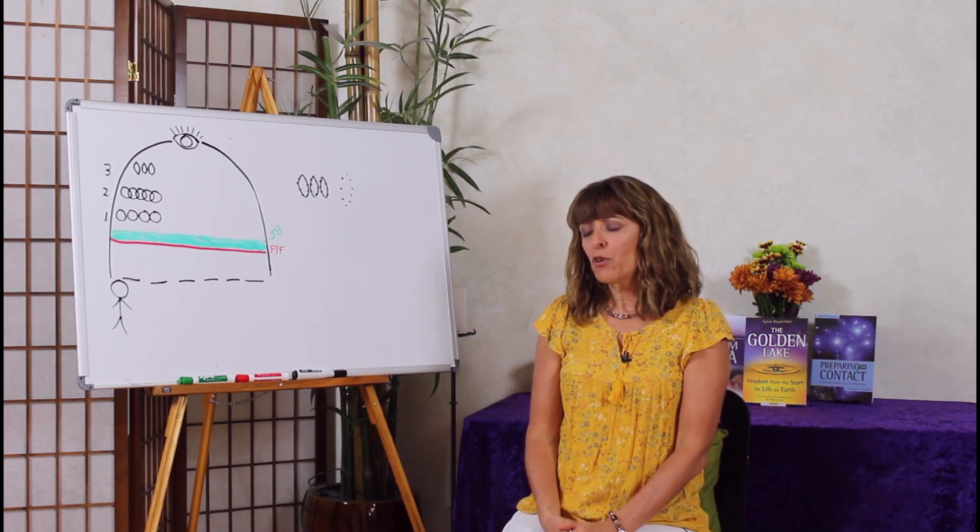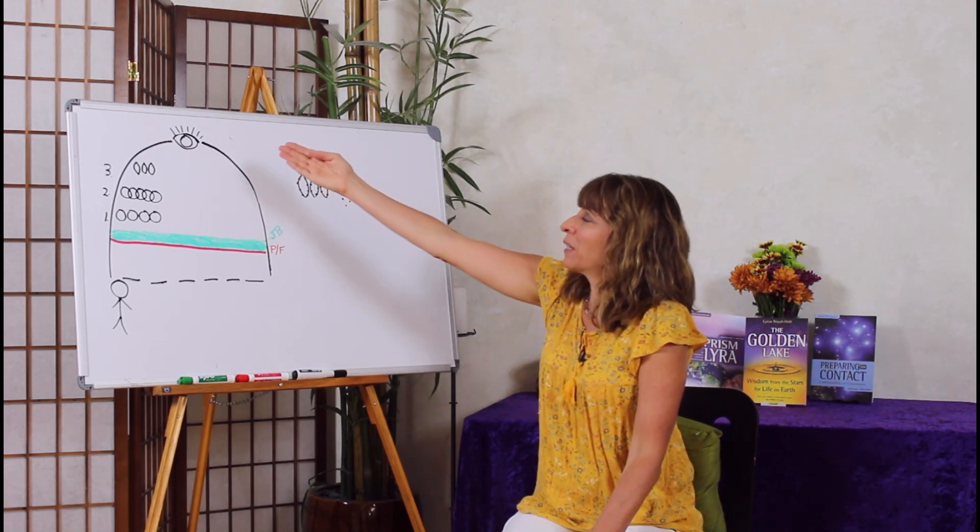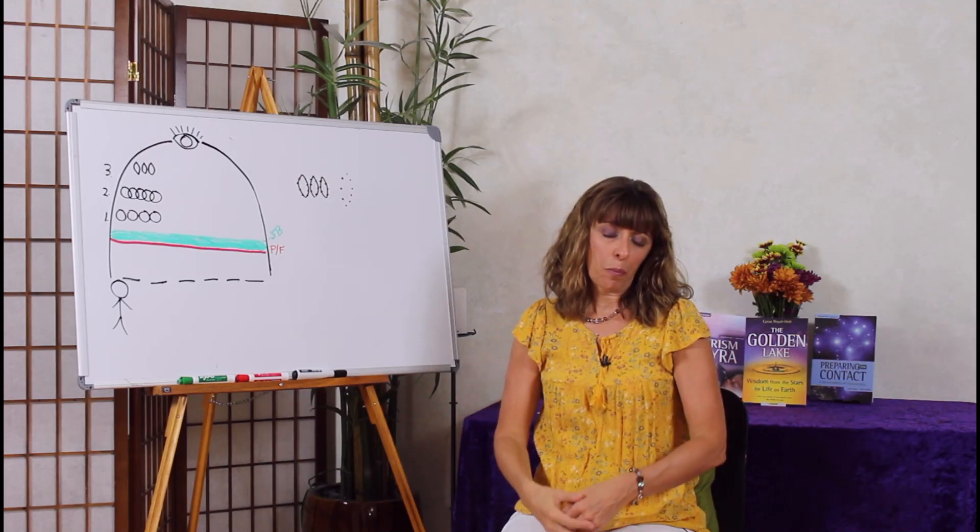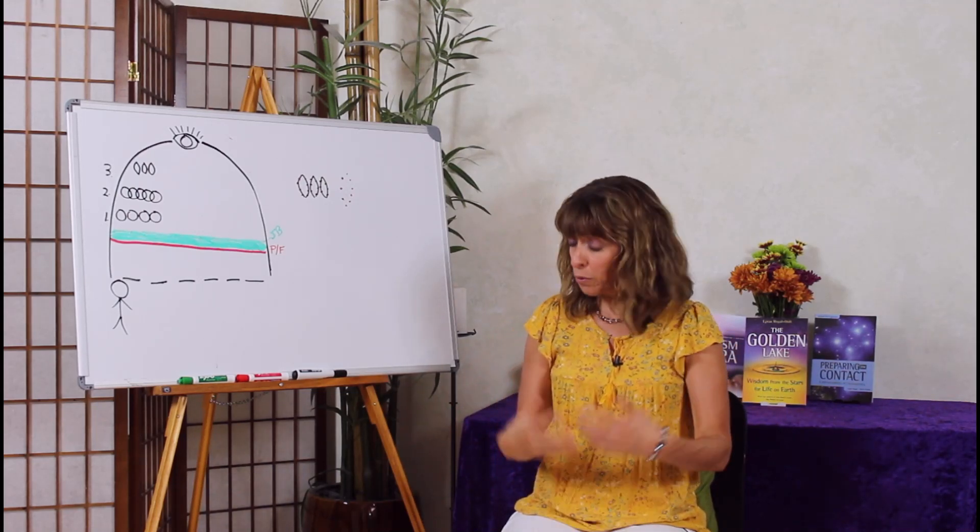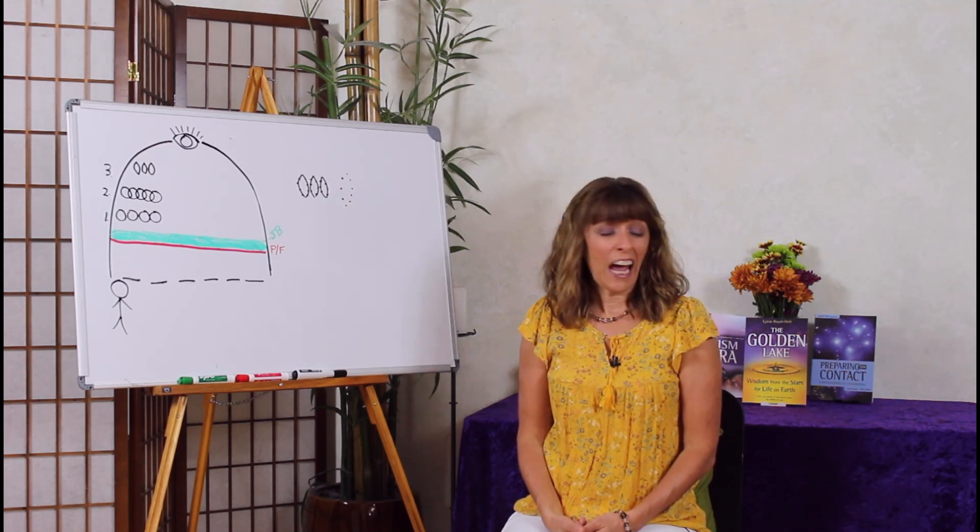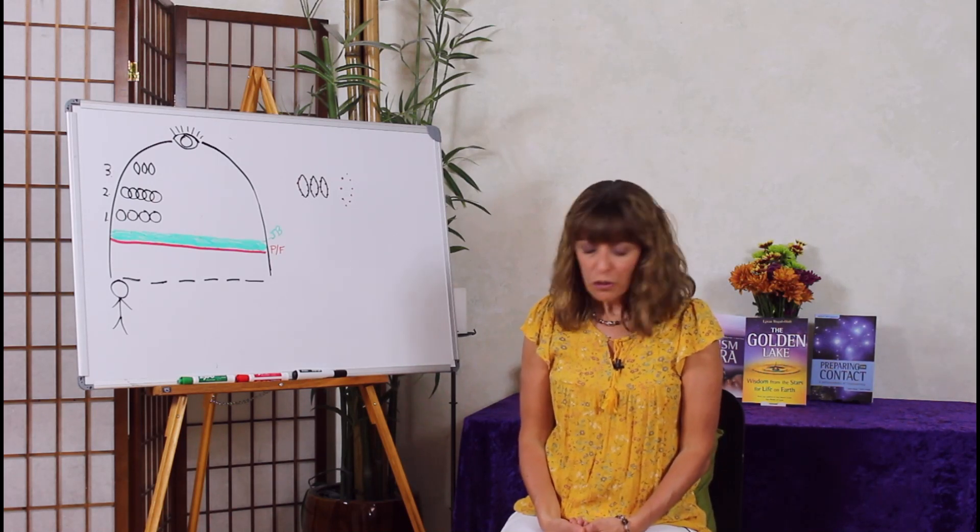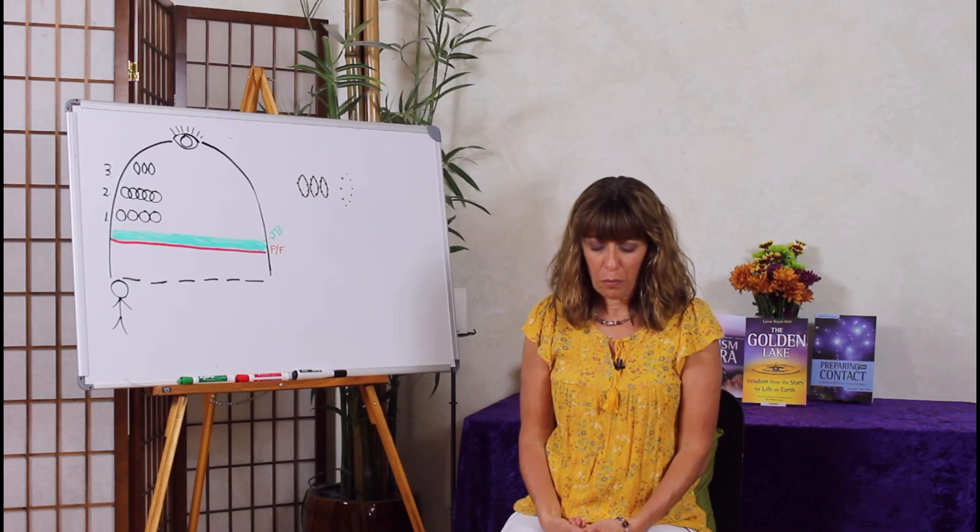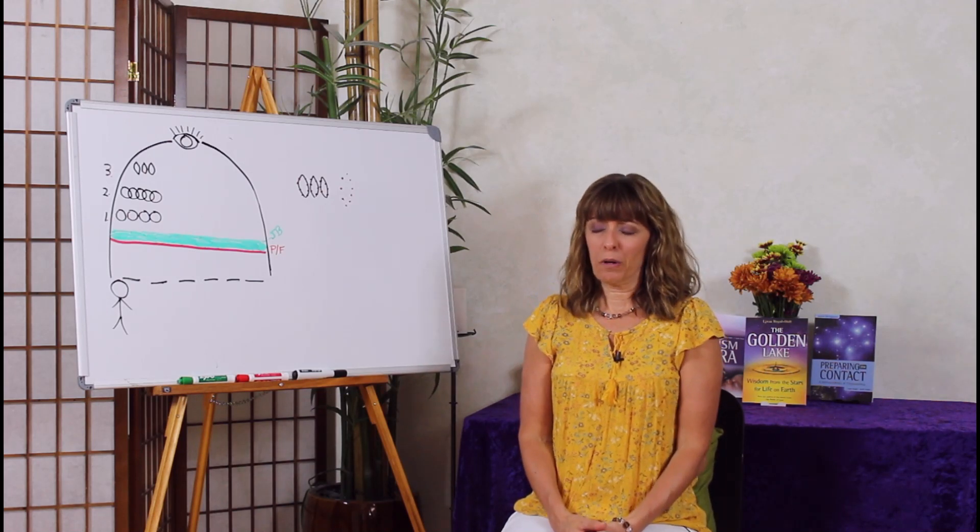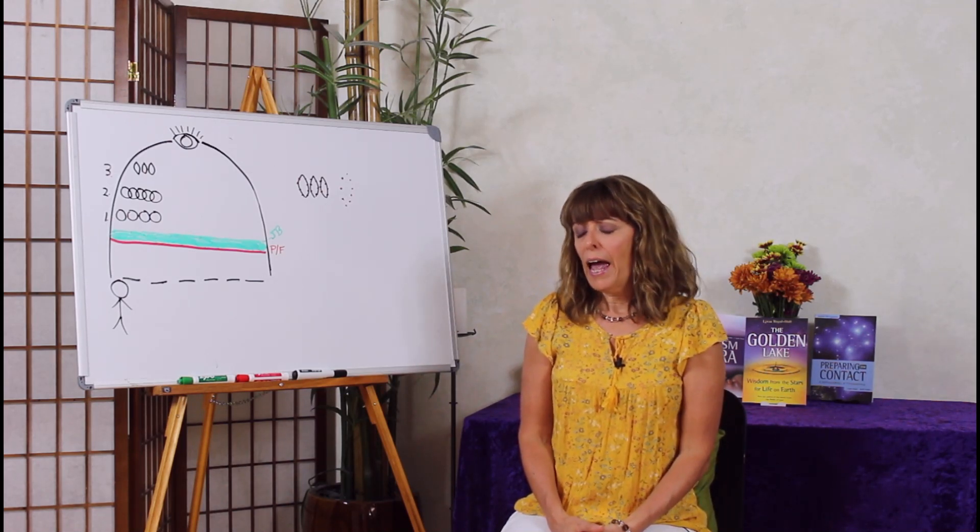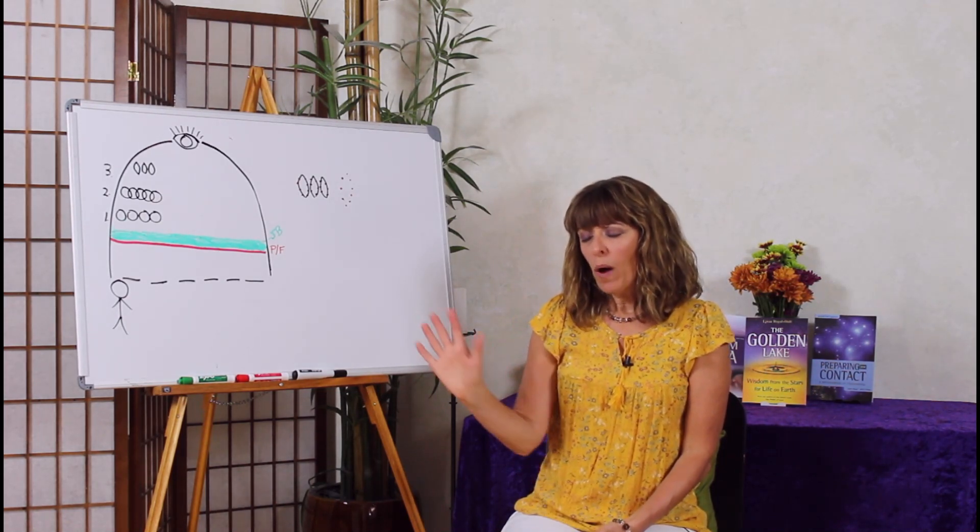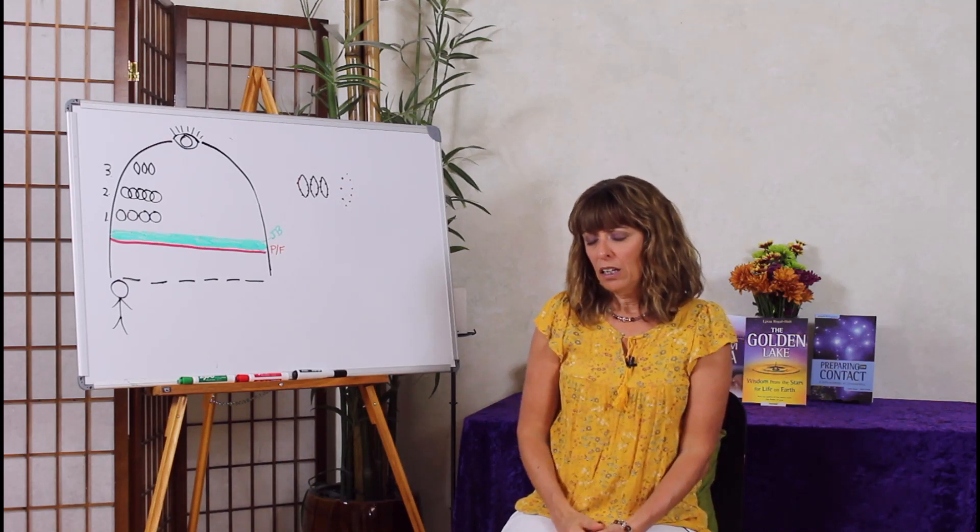So as the one consciousness depicted here on the quantum contact map as the I began its process of separation into the physical reality for the purpose of experience, learning and growth, it shut down various aspects of itself. It also experienced pain from the separation, and each fragment translated that experience in a different way. And therefore when they come into a physical reality, the way they see reality is distorted.